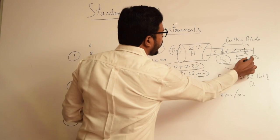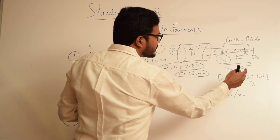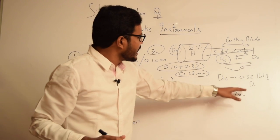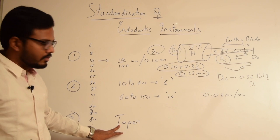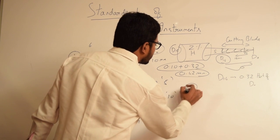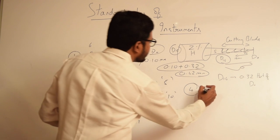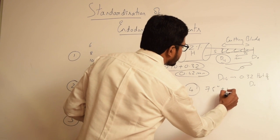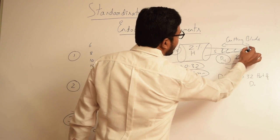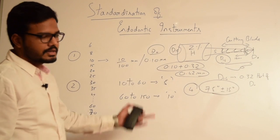For a size 10 file at D0 the diameter is 0.1 mm. At D1 — that is 1 mm away from the tip — the diameter would be 0.1 plus 0.02 mm. This gives us a standardized taper. That's what Engel and Levine have postulated. The fourth recommendation: the angle at the tip of the instrument is 75 degrees plus or minus 15 degrees.